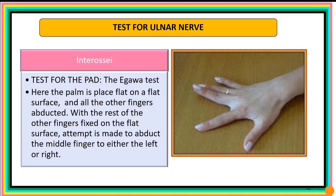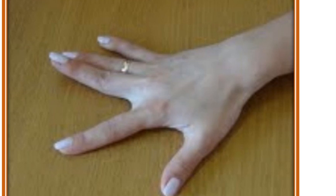The Agawa test is used to assess the abduction function of the dorsal interossei. The palm is placed on a flat surface with all fingers abducted. With the other fingers fixed on the surface, the patient is asked to abduct the middle finger either to the left or to the right. Inability to do this shows weakness or paralysis of the dorsal interossei, pointing to a lesion of the ulnar nerve supplying these muscles.